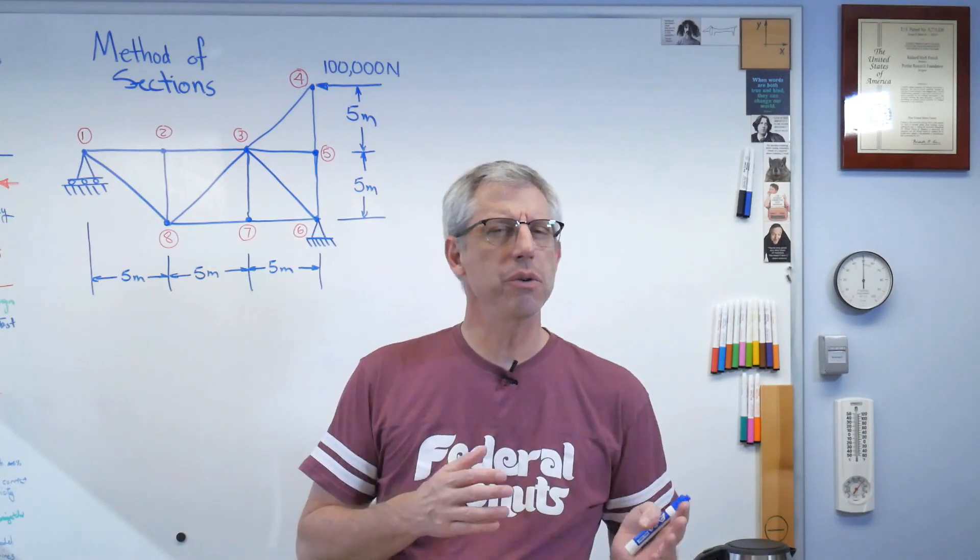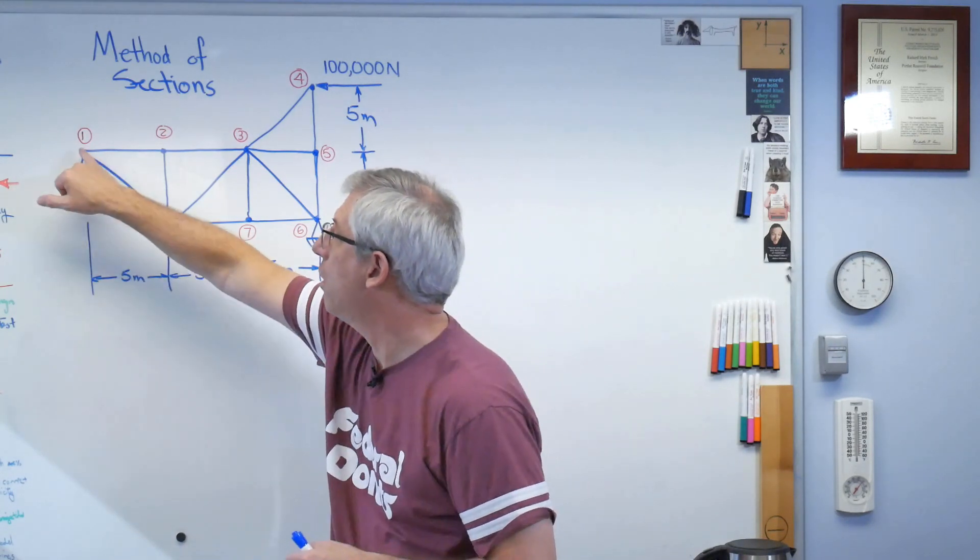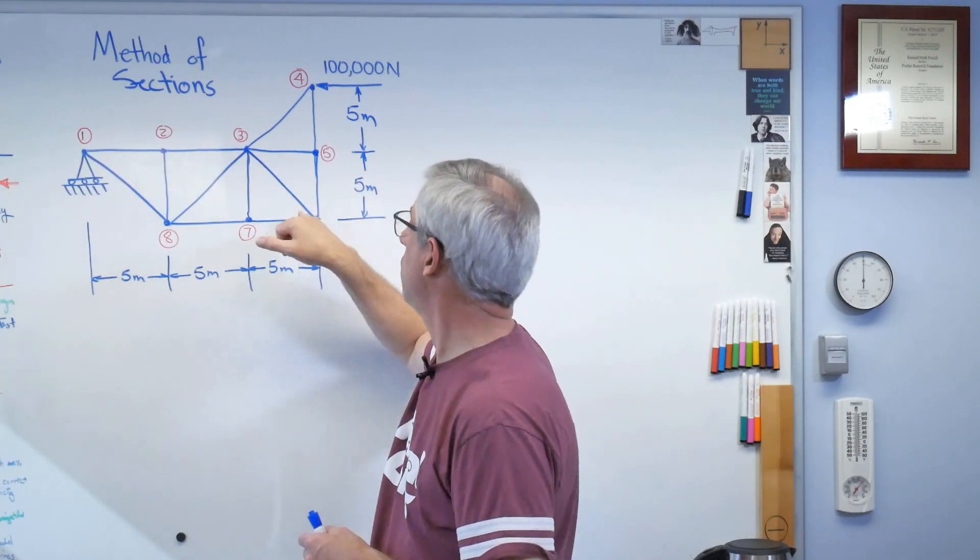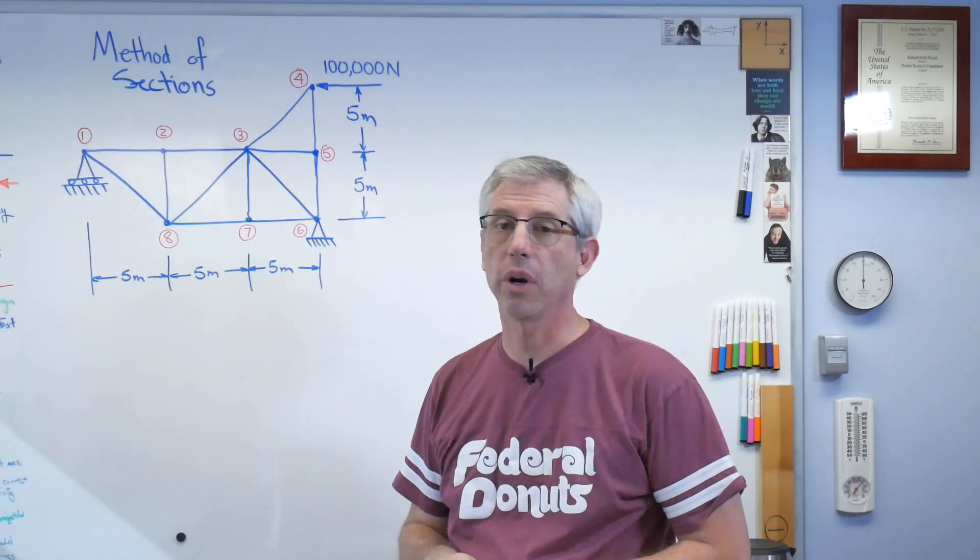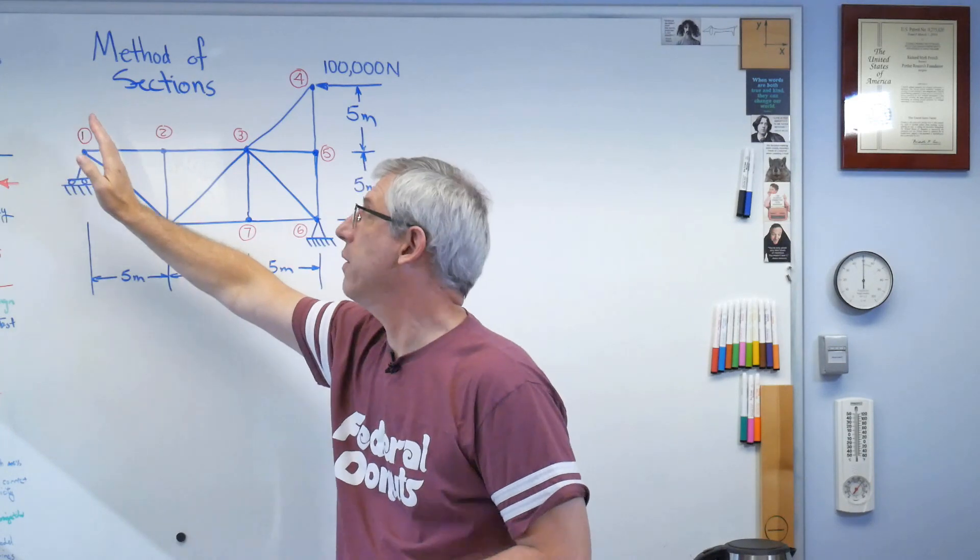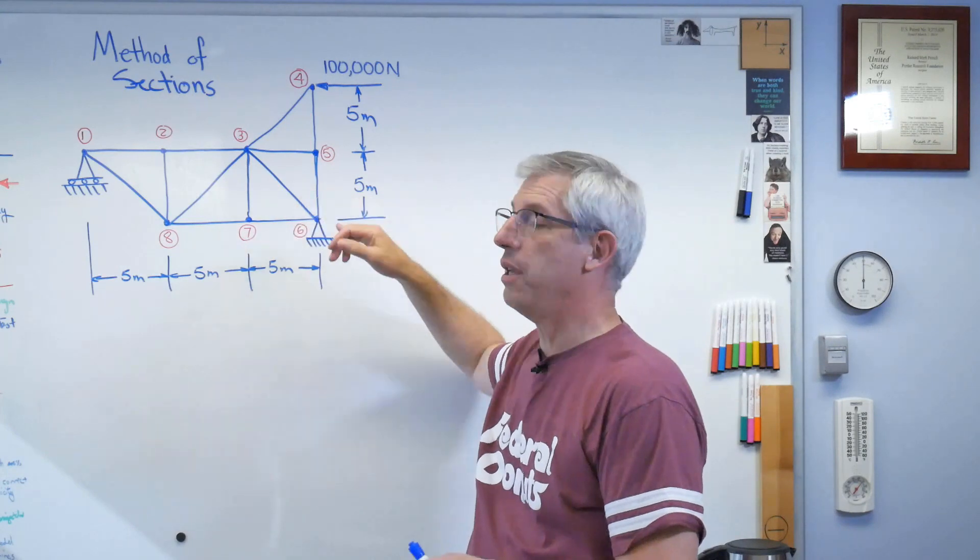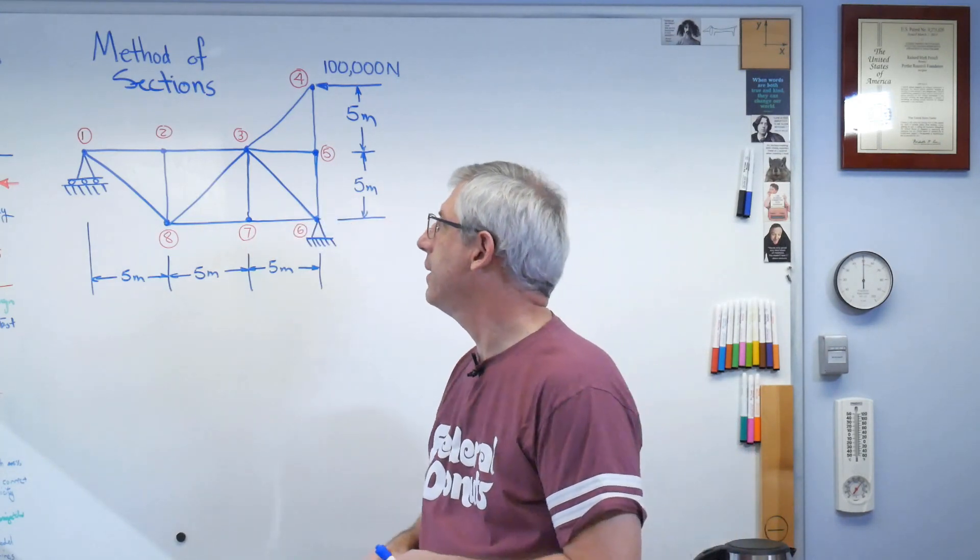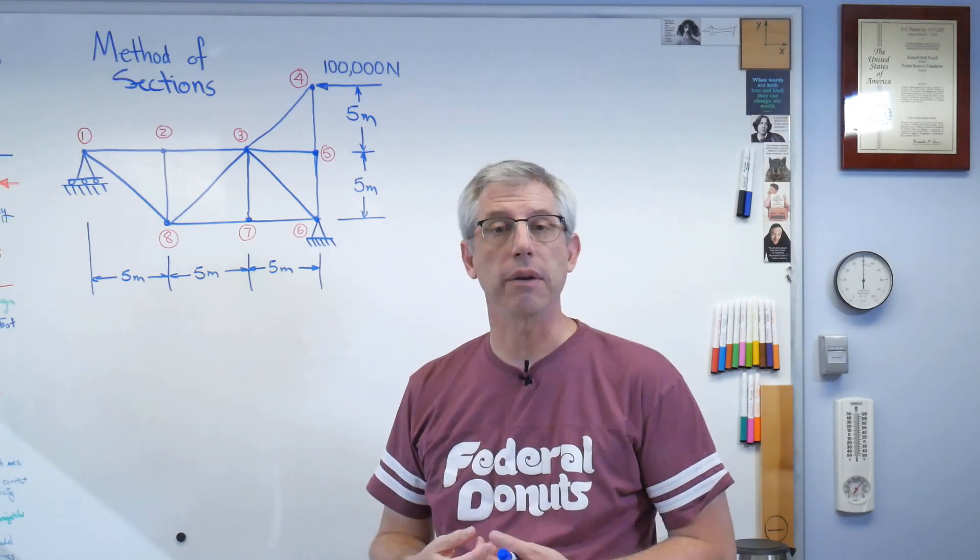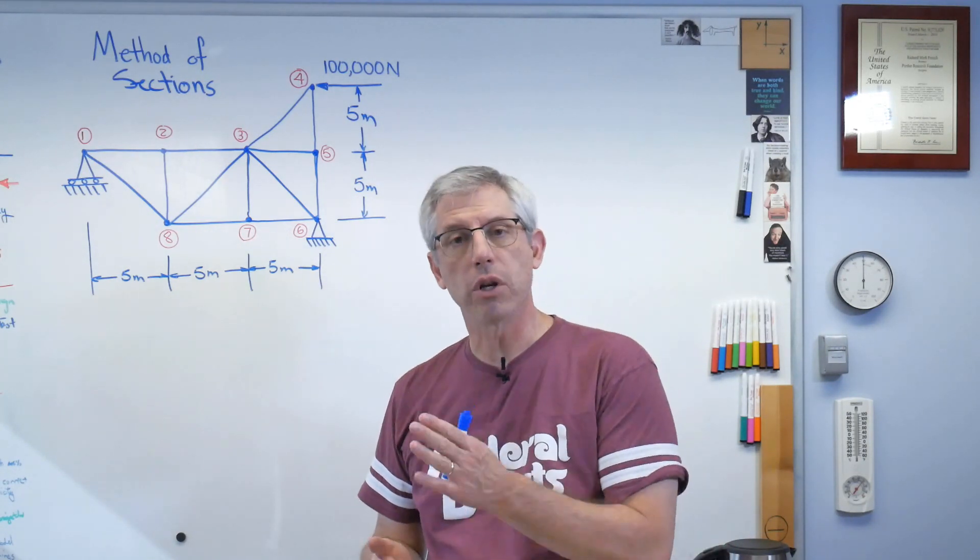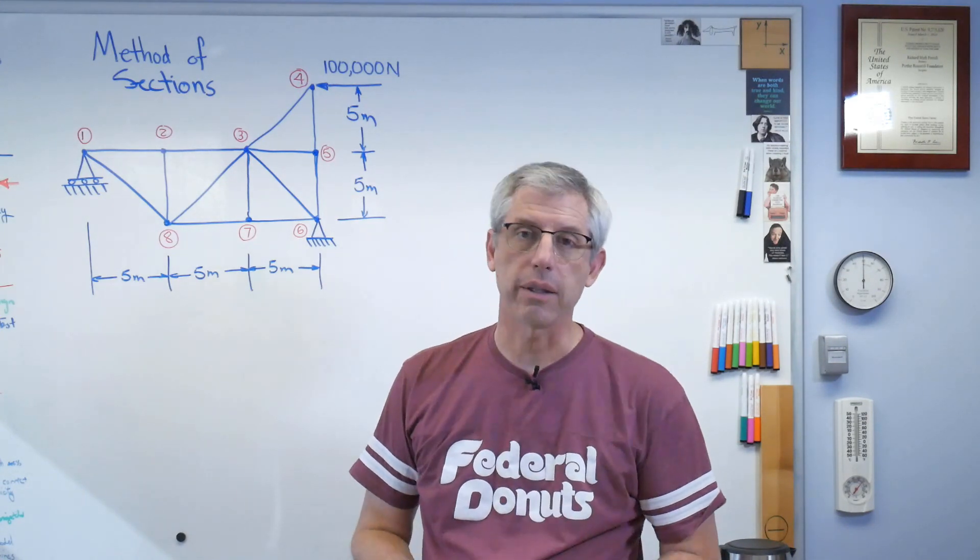Before we get started, why would you choose the method of joints or the method of sections? With method of joints, you solve for forces at all the individual pin joints. If you want to know what's going on inside the structure somewhere, you've got to start at one end or the other and work all the way through until you finally get the one you want. Another way to do it is to simply put what's called a fictitious cut. We're going to draw a line and look at the forces across that line. That's the method of sections.